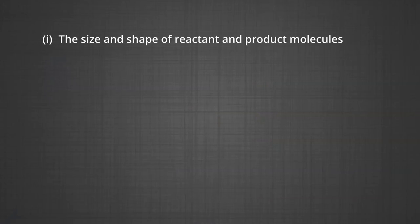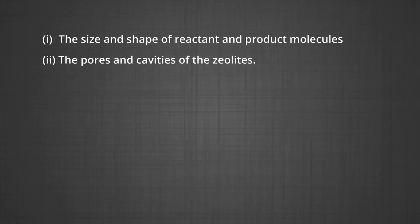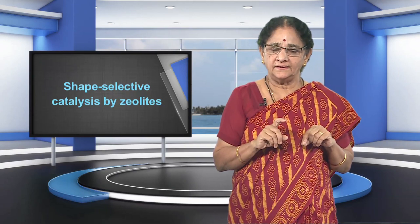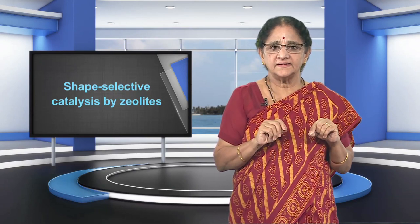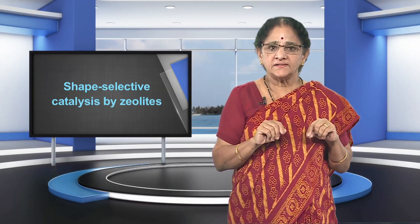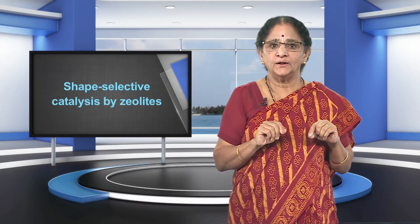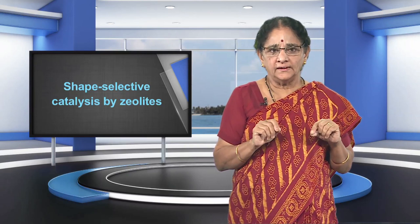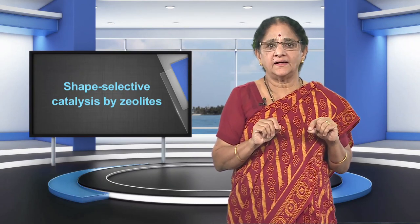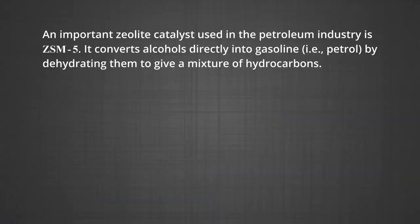Therefore, only those molecules which have sizes smaller than the pore size of the zeolites can enter and leave the pores. The reactions taking place in zeolites depend upon two factors: the size and shape of the reactant and product molecules, and the pores and cavities of the zeolites. Zeolites are found in nature as well as synthesized for catalytic selectivity. They are widely used as catalysts in petrochemical industries for cracking of hydrocarbons and isomerization. An important zeolite catalyst used in petroleum industries is ZSM-5, which converts alcohols directly into gasoline by dehydrating them to give a mixture of hydrocarbons.